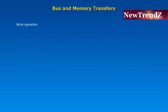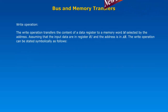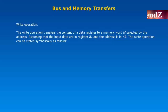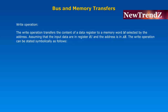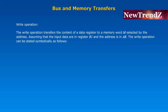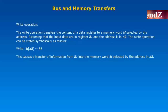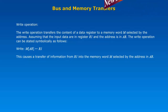Write operation: The write operation transfers the content of a data register to a memory word M, selected by the address. Assuming that the input data are in register R1 and the address is in AR, the write operation can be stated symbolically as shown here. This causes a transfer of information from R1 into the memory word M, selected by the address in AR.